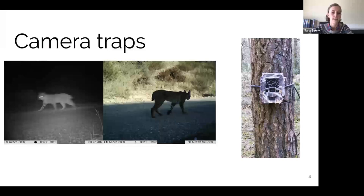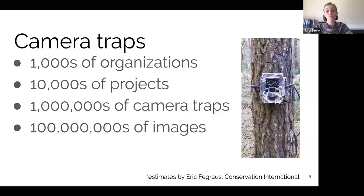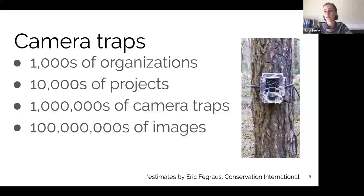I'm showing examples from two different images from the same camera trap. You get a lot of variability within camera trap data — things can be kind of hard to classify, even for humans. To give you an idea of the scope of this single data stream: there are thousands of organizations using camera traps, tens of thousands of camera trap projects, millions of actual camera traps, and hundreds of millions of camera trap images that already exist, and that is only scaling up as sensors become cheaper and easier to operate.